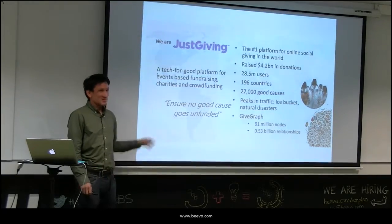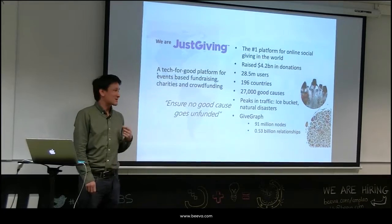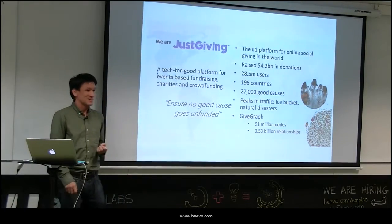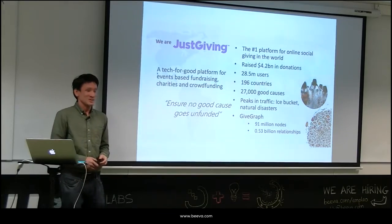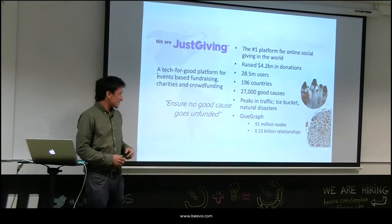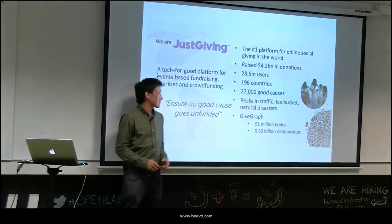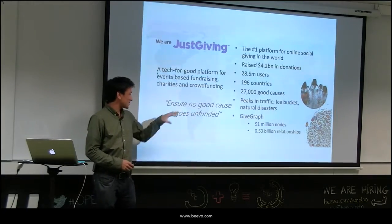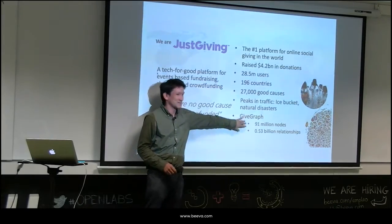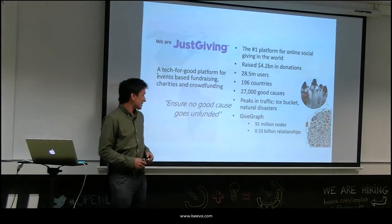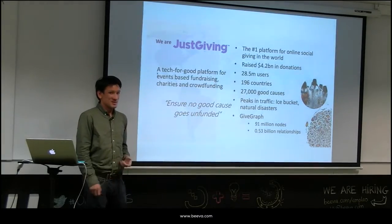Our motto is to ensure that no good cause goes unfunded — it's about connecting charities with specific users. How do we ensure that? We preserve content relevant to users, something they're really interested in and passionate about, a bit like what Facebook does showing what's relevant. To do that you need to understand the graph. We've got one of the biggest graphs in the social giving space: half a billion relationships and 91 million nodes. This is what we call the Give Graph, which integrates with Facebook data, our own data, and charity data.